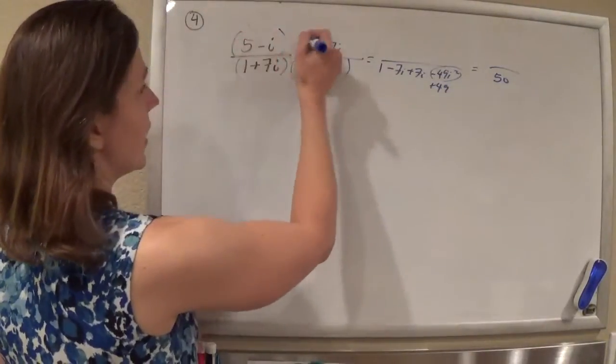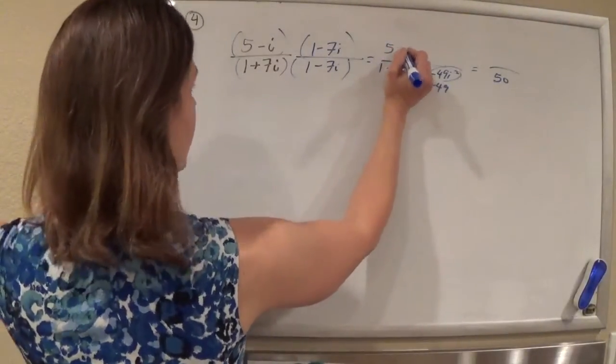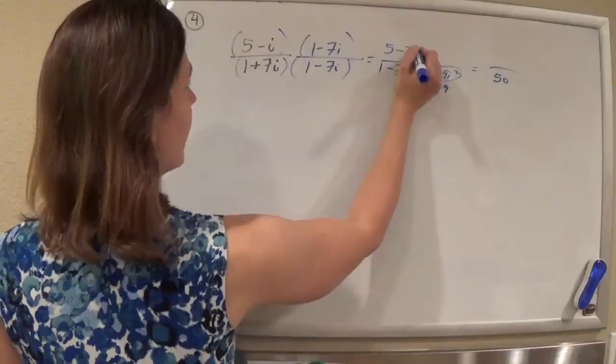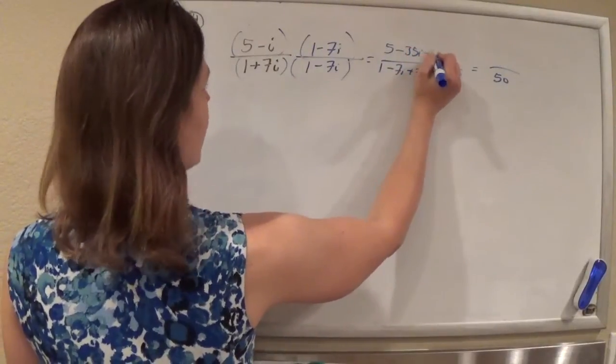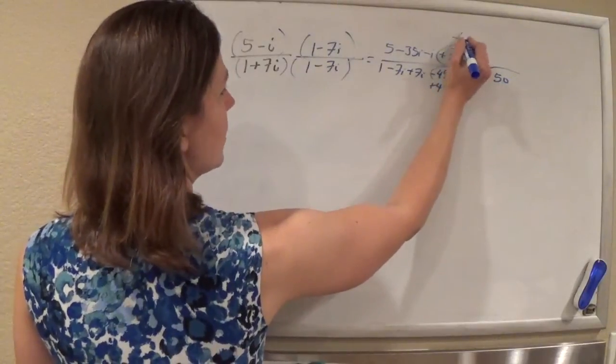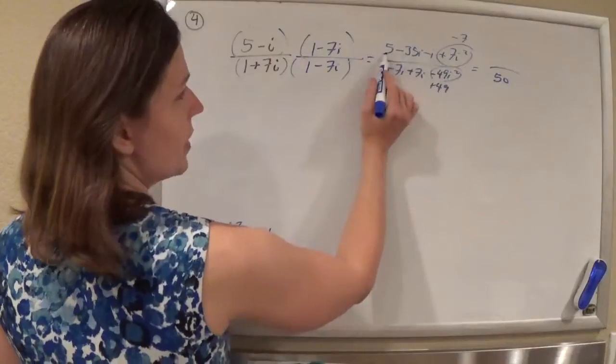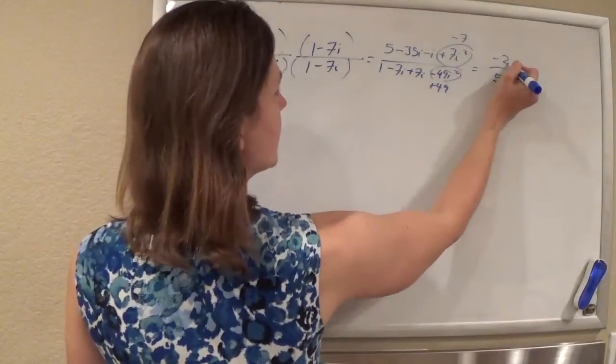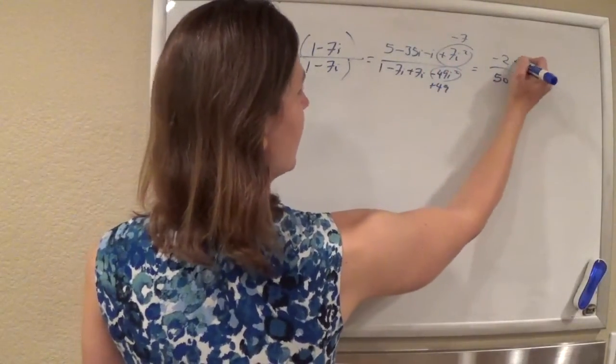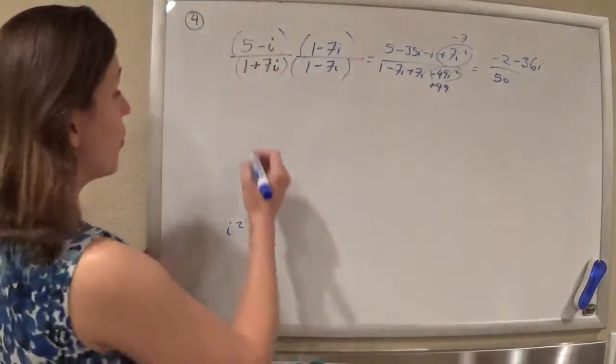And then now all we have to do is see what happens at the top. We'll have 5 foiling minus 35i minus i plus 7i squared. And again, since i squared is negative 1, that'll be 7 times negative 1 is negative 7. So 5 minus 7 is negative 2, minus 35i minus i is minus 36i. And we're almost there.